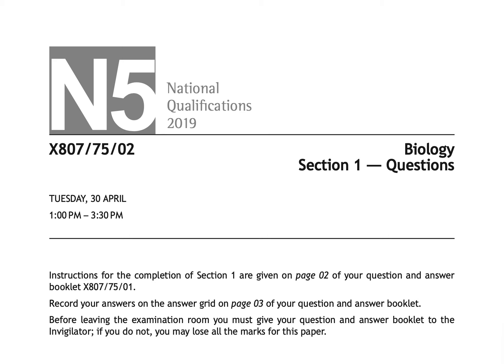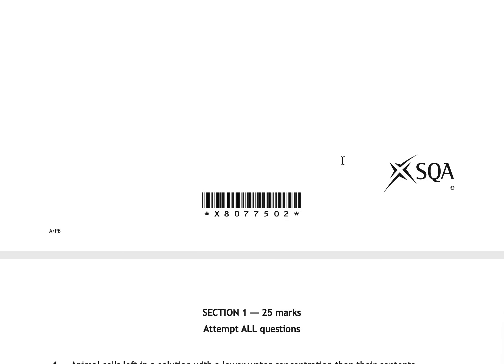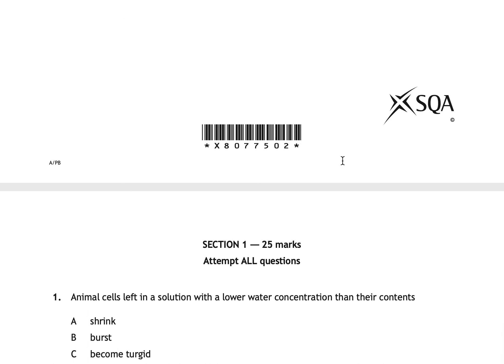The easiest approach is to pause when you come to a question, attempt it yourself, then I'll give you the answer and explanation. If you get it right, fantastic. If you get it wrong, it's important to understand why — you may have made a mistake, misread the question, or not be entirely sure of a concept. The 2019 paper can be found on the SQA website; I'll try to attach a link as well.